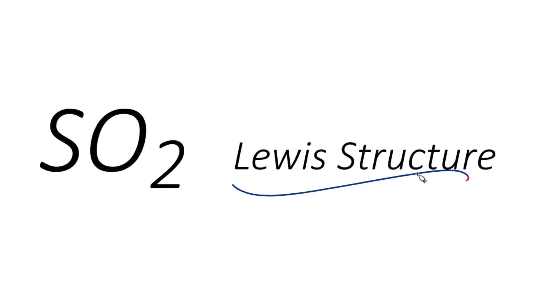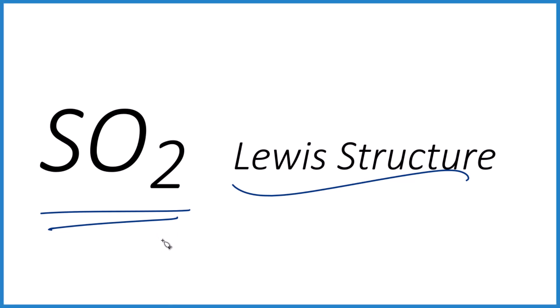So here's how you draw the Lewis structure for SO2. This is sulfur dioxide. The first thing when we draw Lewis structures, count the valence electrons.